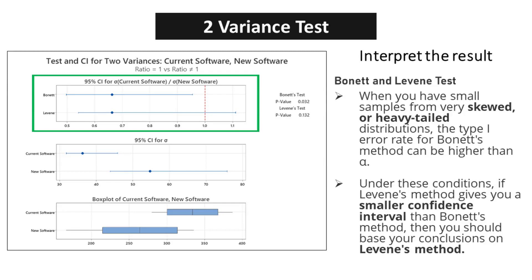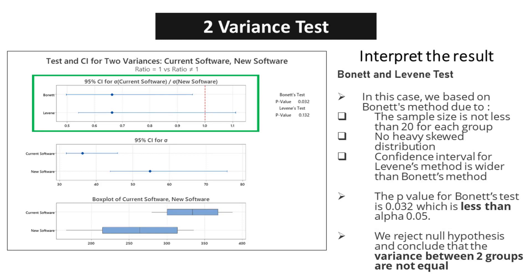When you have small samples from very skewed or heavy-tailed distributions, the type I error rate for Bonnet's method can be higher than alpha. Under these conditions, if Levene's method gives you a smaller confidence interval than Bonnet's method, then you should base your conclusions on Levene's method. In this case, we based on Bonnet's method because the sample size is not less than 20 for each group and there is no heavy skewed distribution. The p-value for Bonnet's test is 0.032, which is less than alpha 0.05. We reject the null hypothesis and conclude that the variance between two groups is not equal.